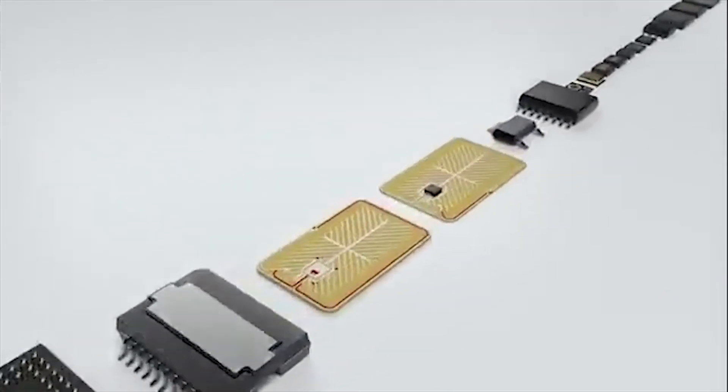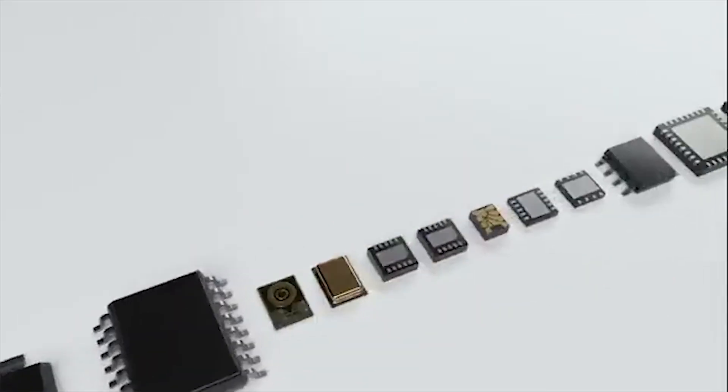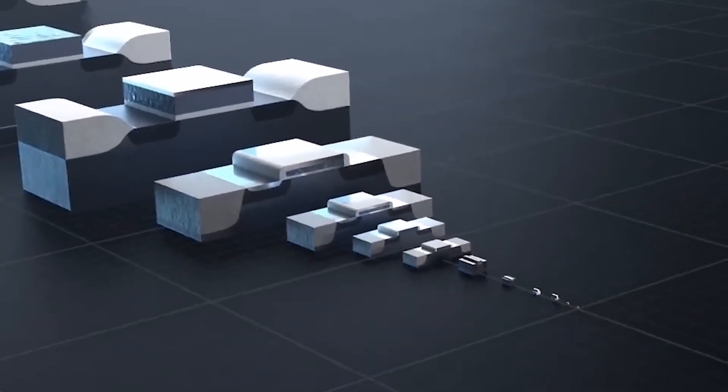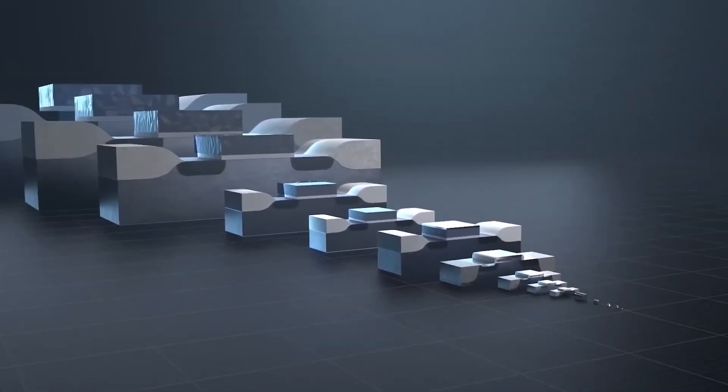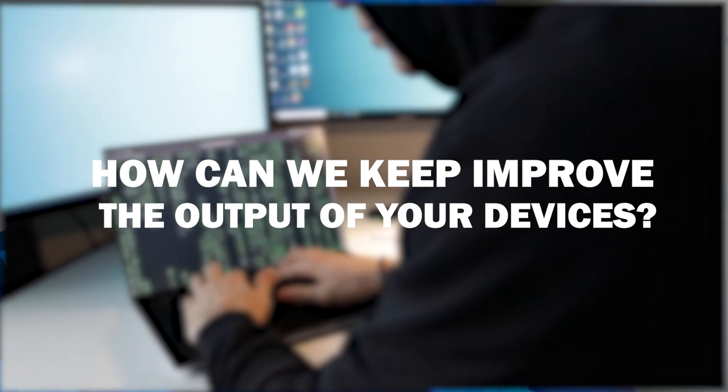So the capacity for producing smaller transistors is diminishing. The inescapable reality is that we are approaching the boundary of how small we can make a transistor. So how can we keep improving the output of our devices?